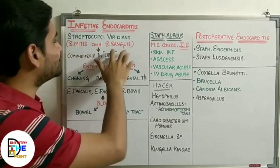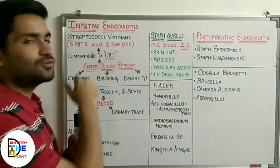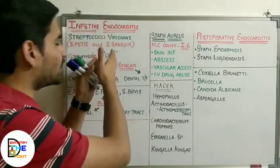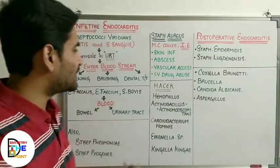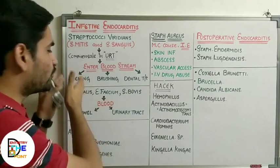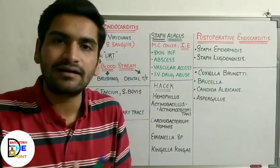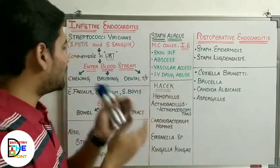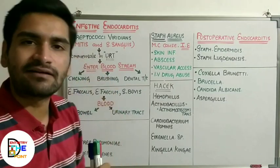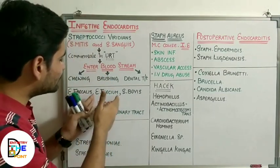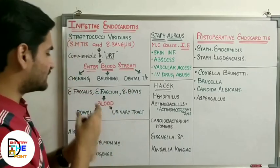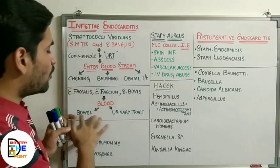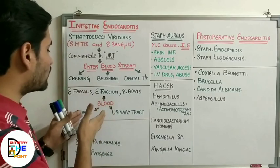Regarding Streptococcus viridans, there are two microorganisms: Streptococcus mitis and Streptococcus sanguis. These are common commensals of the upper respiratory tract. They easily enter the bloodstream by chewing food, brushing, or any dental treatment, and may enter the bloodstream and cause infective endocarditis. Next, Enterococcus faecalis, E. faecium, and Streptococcus bovis can enter the bloodstream through the bowel or urinary tract.